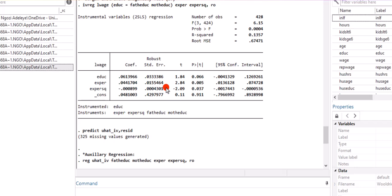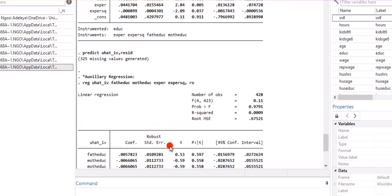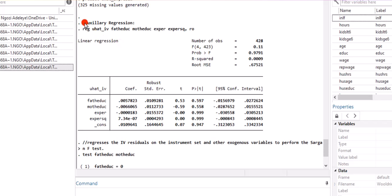We have our results on the screen right here. This is the first one, the structural equation estimated. From there, we predicted the residual, and after that, we performed the auxiliary regression. This is what we are mostly interested in, the auxiliary regression, the results from here.